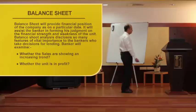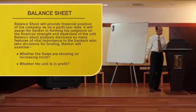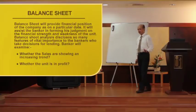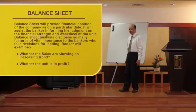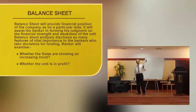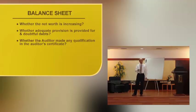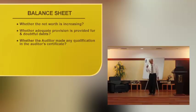Which are the areas to be looked into so far as the balance sheet is concerned? While going through the balance sheet, the first and foremost thing the banker would look into: whether the sales are in increasing trend, whether the unit is in profit, whether the net profit is increasing, whether adequate provision is provided for bad and doubtful debts. If any doubtful debts are there, whether adequate provision is made or not. Whether the auditor made any qualification in the report, as I already indicated, these are the major areas by which the banker would look into while going through the profit and loss as well as the balance sheet.